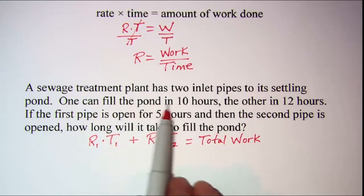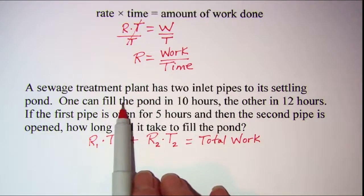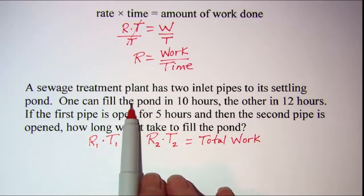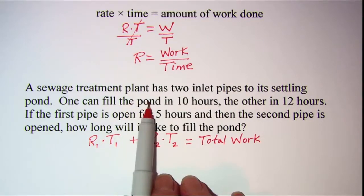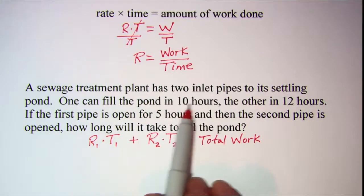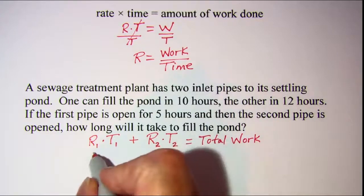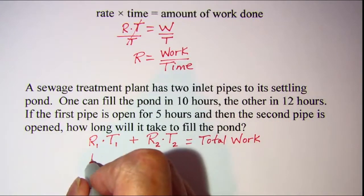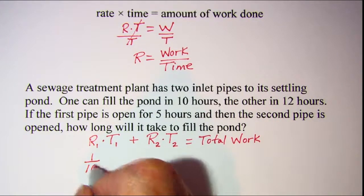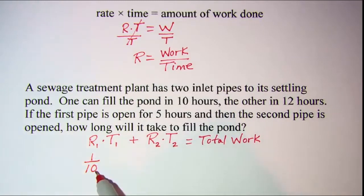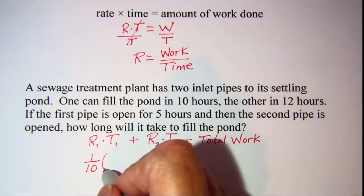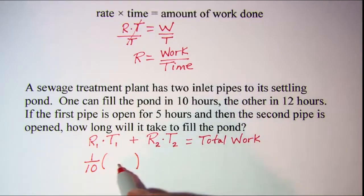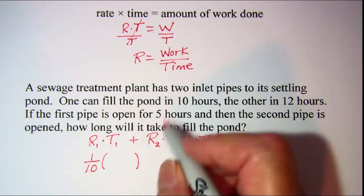One can fill the pond in 10 hours. So the pond, again what that means is one pond gets filled in 10 hours. So the rate for that first pipe is 1 in 10 hours, or 1 tenth of the pond per hour. And then let me just put a space here for that time for the first pipe. We'll fill that in in a minute.